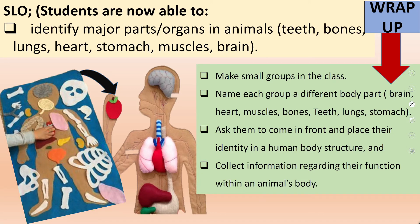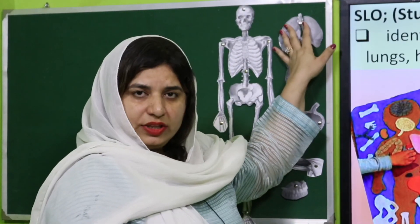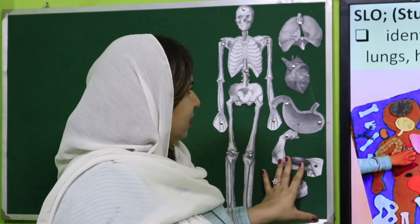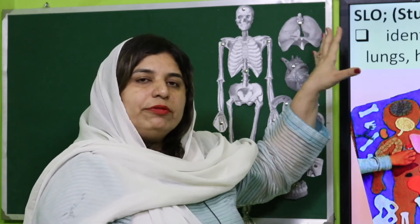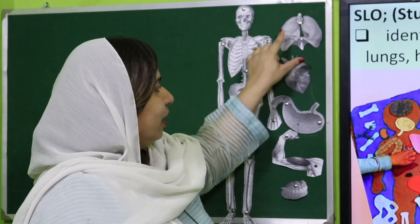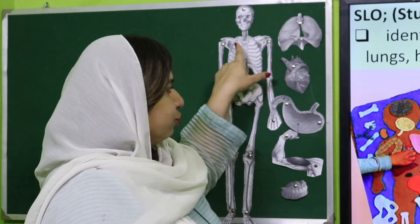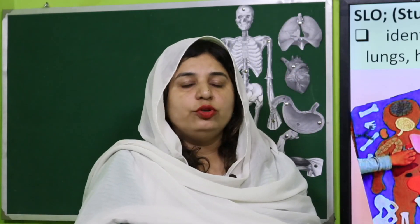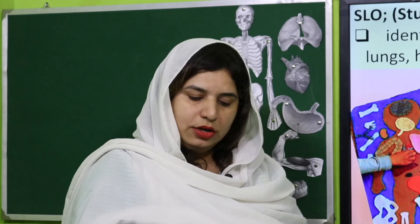Now let us wrap up what we have learned today. For the wrap-up activity, teachers should make small groups in class and distribute body parts cutouts to students. Each group will arrange the cutouts to show the complete skeleton structure, indicate where organs are present, and present some basic functions of these organs in class to revise what was learned today.